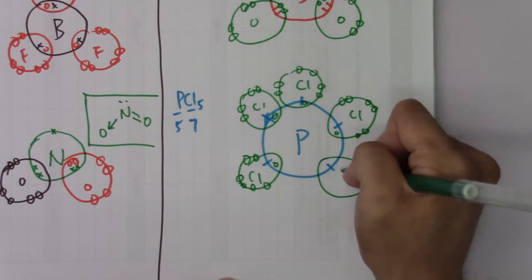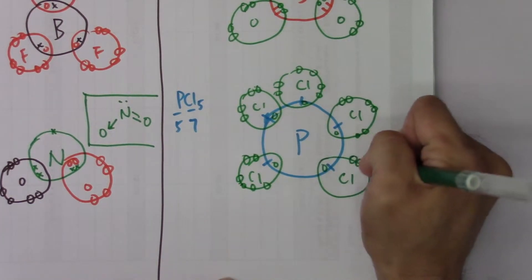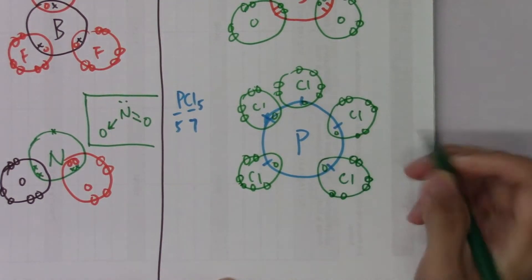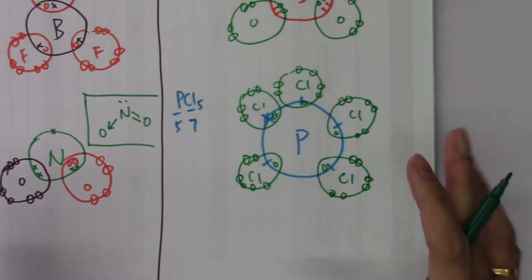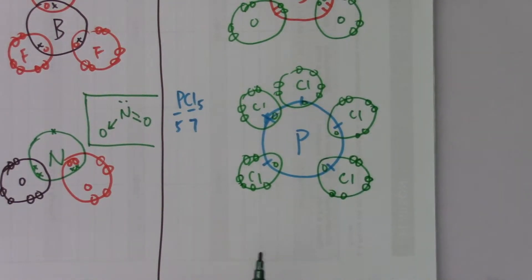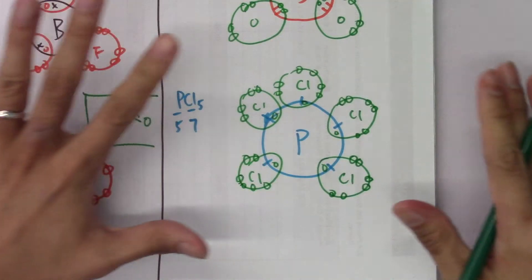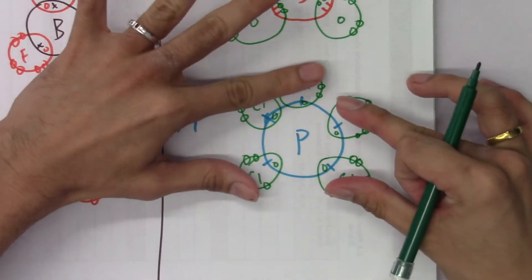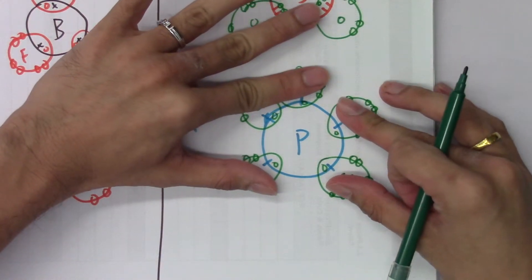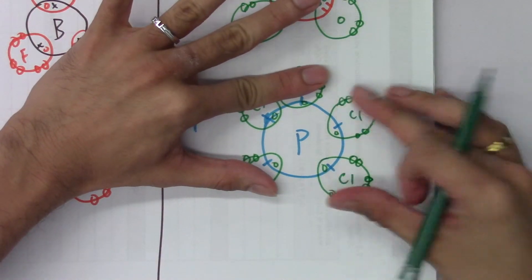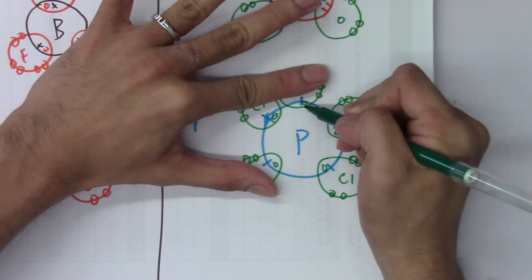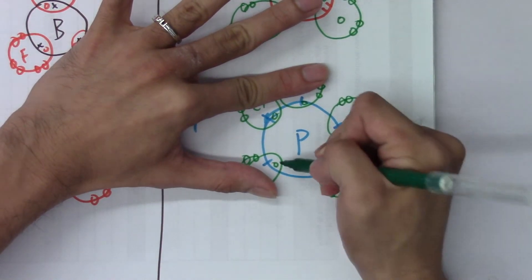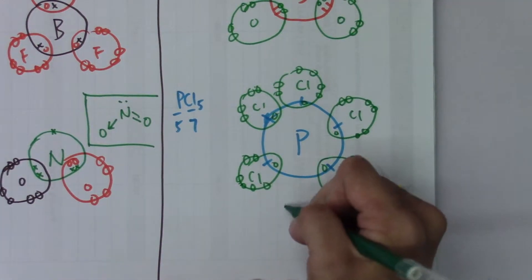For PCl5, this compound also does not follow the octet rule. When we count the number of electrons on phosphorus, it contains ten electrons — one through ten — which is ten electrons, the same as sulfur in SO2.